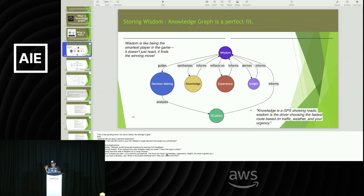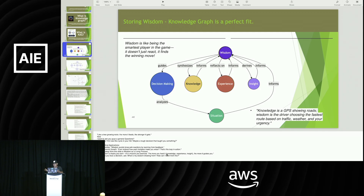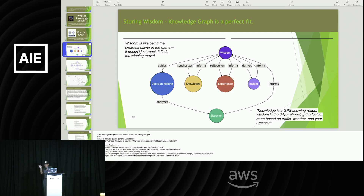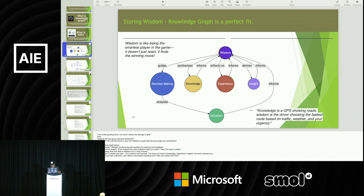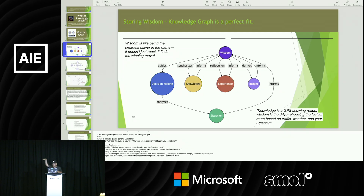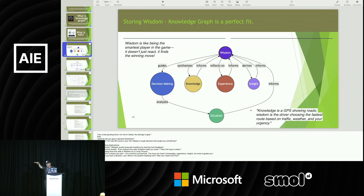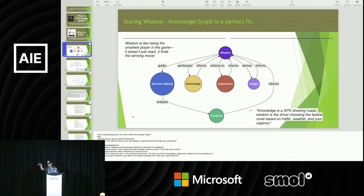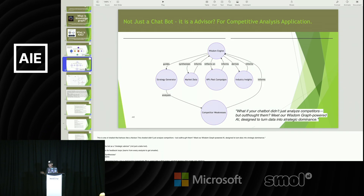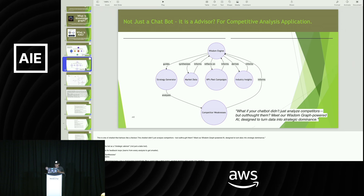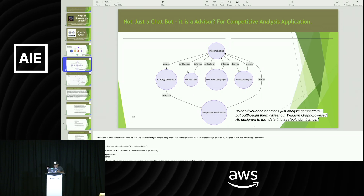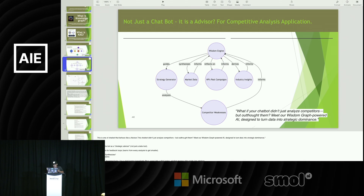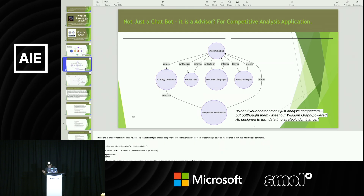One of my clients is doing competitive analysis. They used to have a marketing department doing that, but they want AI to do it. They asked me to build the system. This is exactly what I did with the same taxonomy. This taxonomy and multi-agent system will handle all of that. Here is the chatbot I built — it's a wisdom graph-powered AI designed to turn data into strategy.